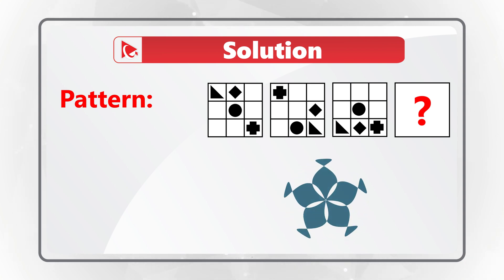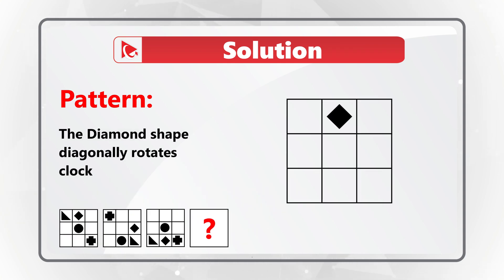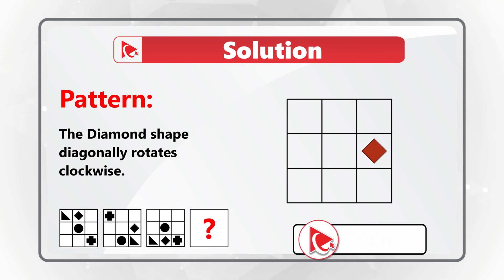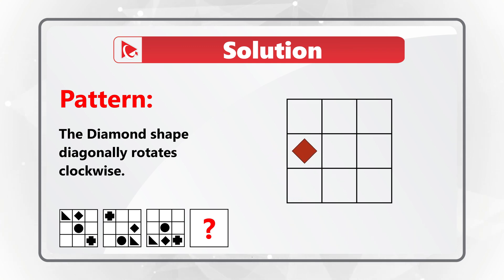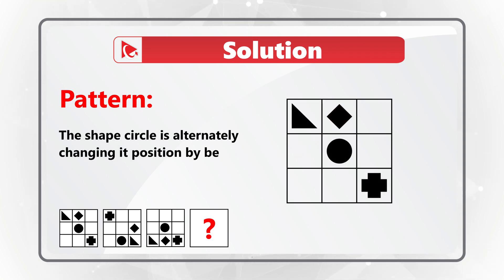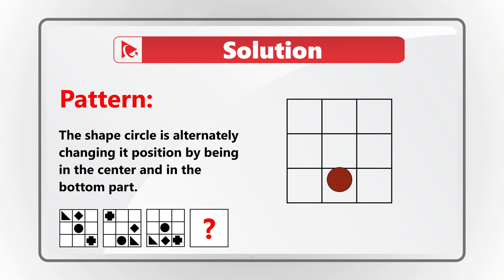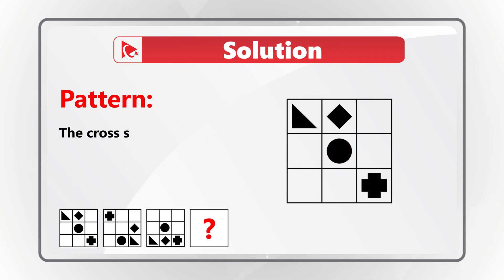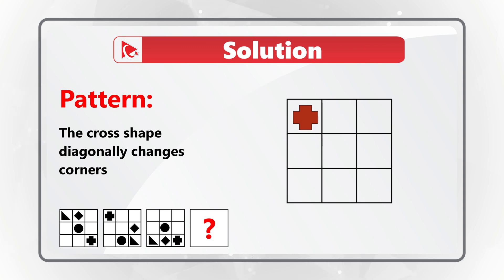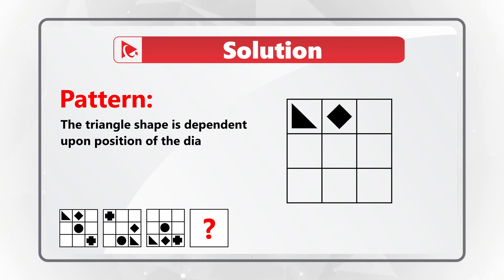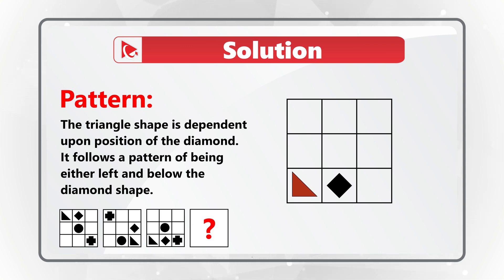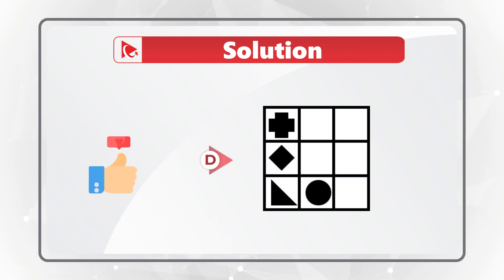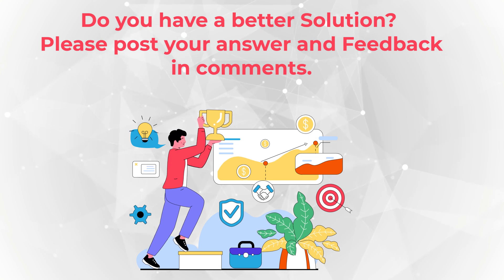Pattern 1: The diamond shape starts in the upper middle, rotates 90° clockwise each step — moving right, then bottom, so in the fourth shape it should be in the middle row to the left. Pattern 2: The circle changes position to the bottom middle column. Pattern 3: The cross shape diagonally changes corners. Pattern 4: The triangle follows the diamond, always positioned to the left of or below it. This is why the correct choice is choice D.